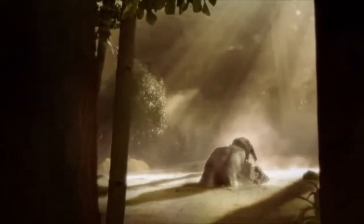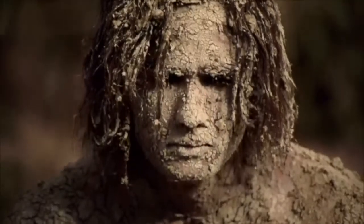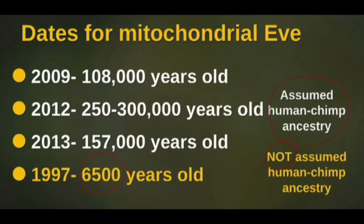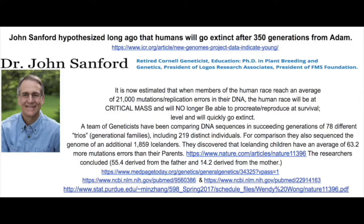The first study results ever done in 1997 confirmed this, and they obtained a time of 6,500 years ago for mitochondrial Eve using observable rates — that's only 327 generations ago. This was secular scientists that discovered this, not creationists. Then, using creationist methods, we assume that Adam and Eve lived around 300 generations ago.